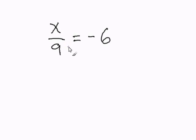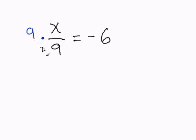Since this is x over 9, we can get rid of 9 by multiplying by 9. Now we must do the same on the other side of the equation to balance it out.